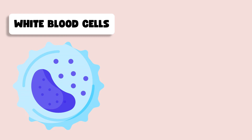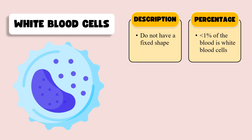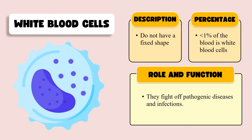Next are the white blood cells or WBCs. As the name indicates, they appear white in color. They do not have any fixed shape — they generally change their shape. Their percentage is less than one percent in the body.